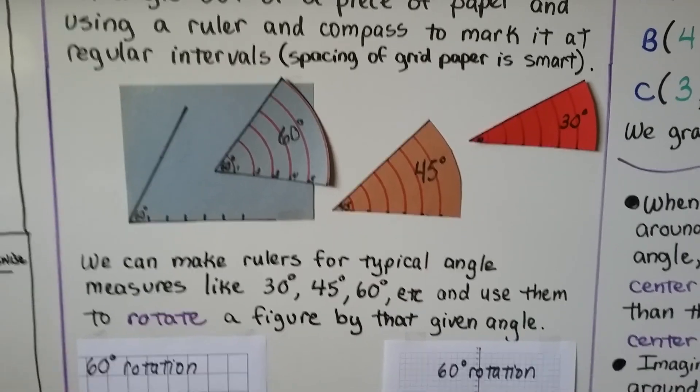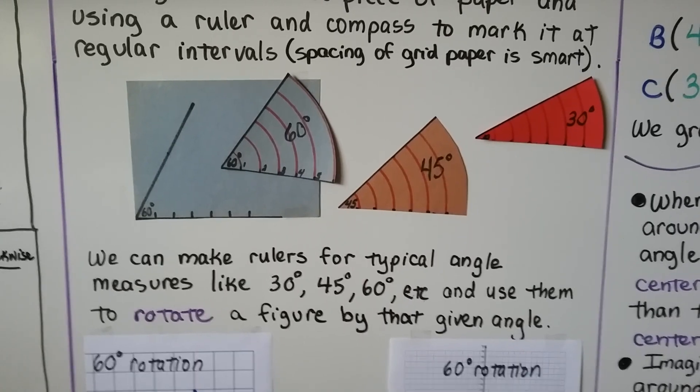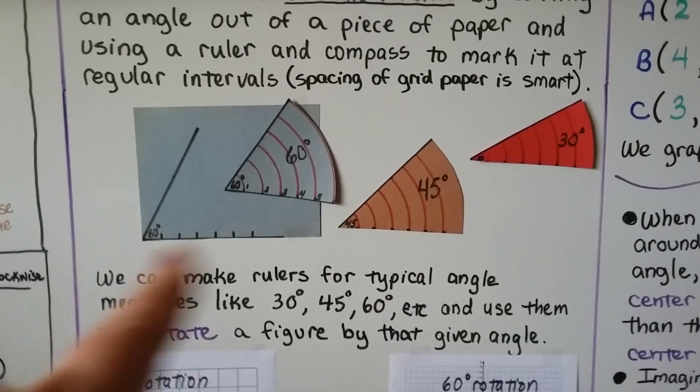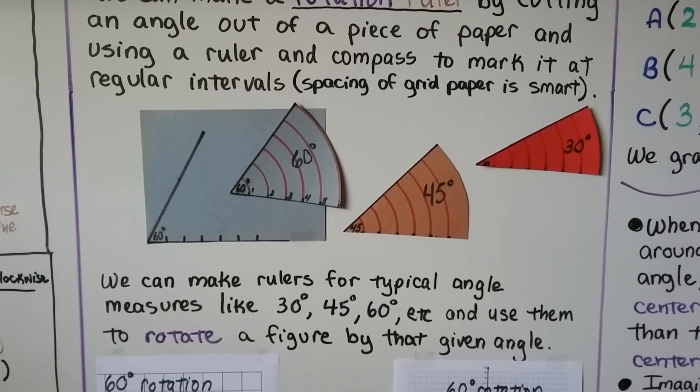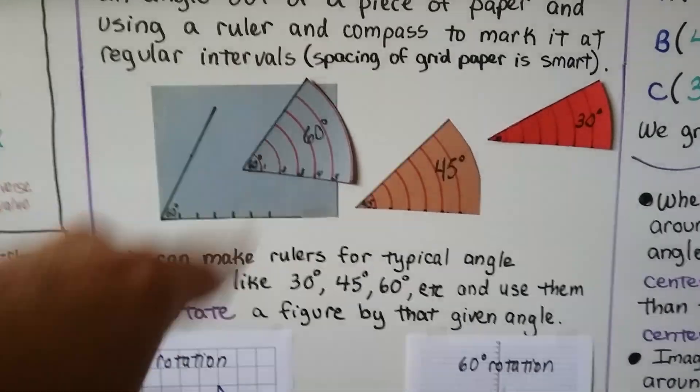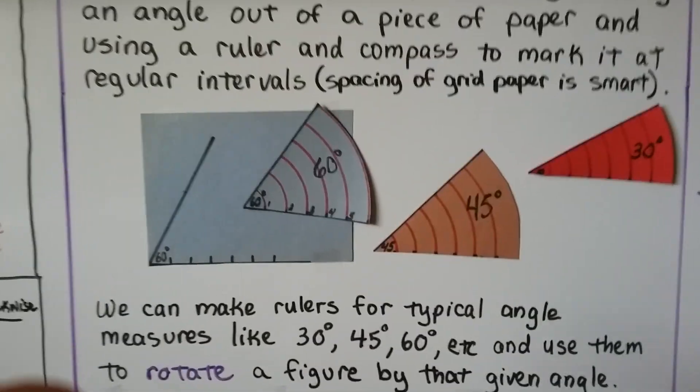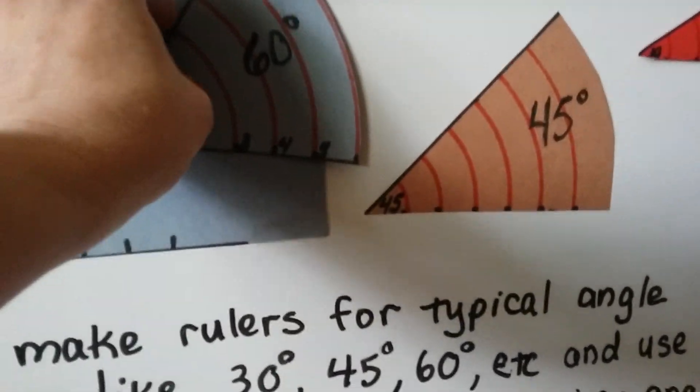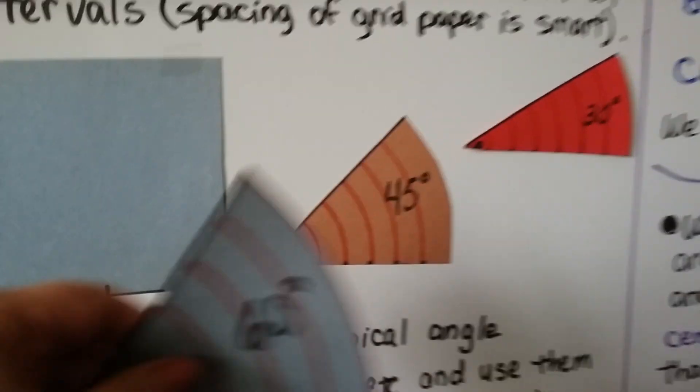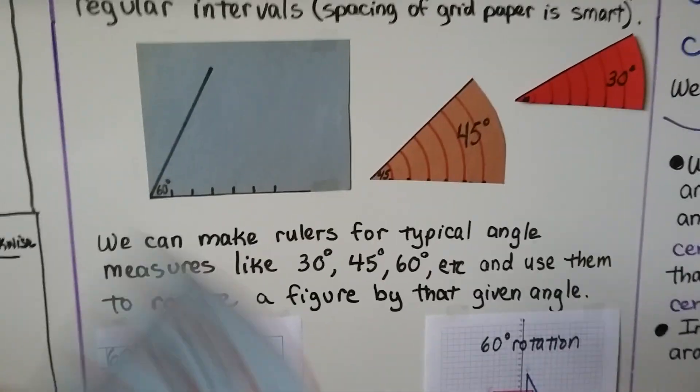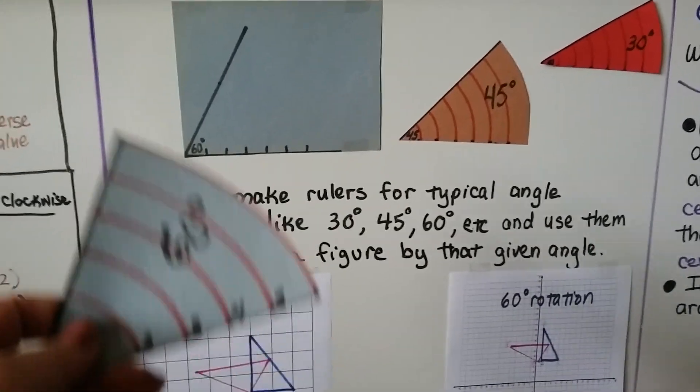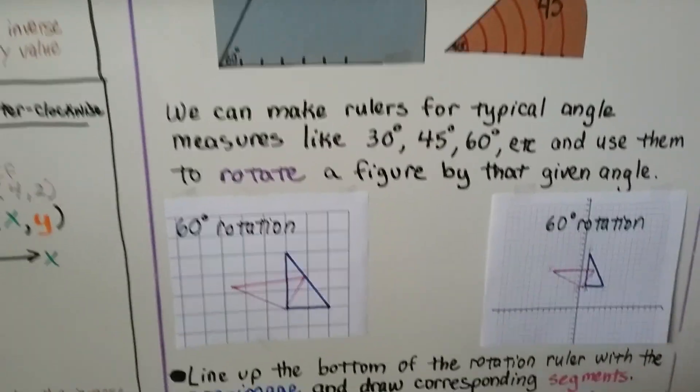Then we can take a compass, and we just make our arcs, keeping the point right here at this vertex and we keep moving our compass bigger and bigger so that we can make all the arcs like that. That's going to give us the same intervals on this side of our rotation ruler. So we can make rulers for typical angle measures like 30 degrees, 45 degrees, 60 degrees, and so on. And we can use them to rotate a figure by that given angle. So I've made a 60, 45, and 30 degree rotation ruler, we're going to use the 60 degree one.